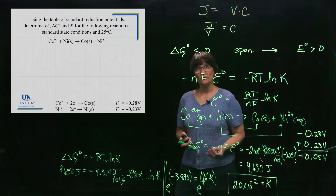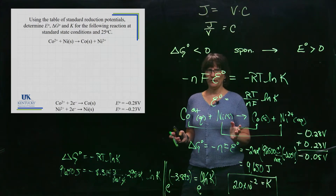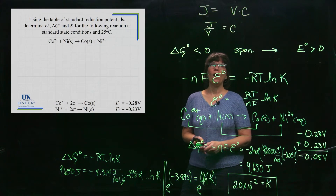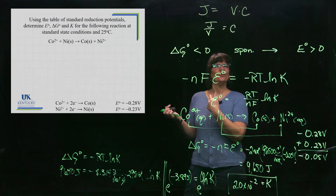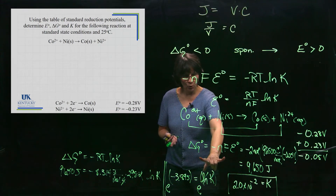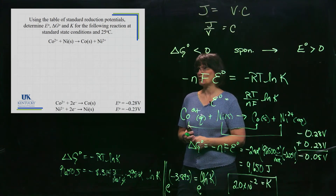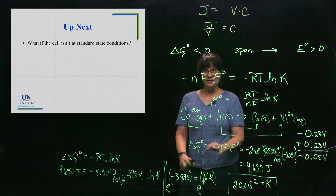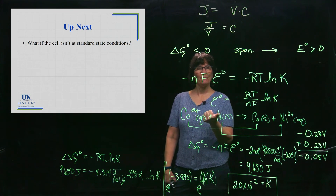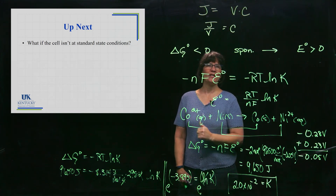You will encounter problems that don't ask you to calculate all three, but you'll need to recognize which variable you need and use the two equations to get there. Those two equations let you move between E°, ΔG°, and K for any redox reaction under standard state conditions — where solutions are 1 molar and gases are at 1 atmosphere. Next, we'll see how to handle reactions that are not under standard state conditions.